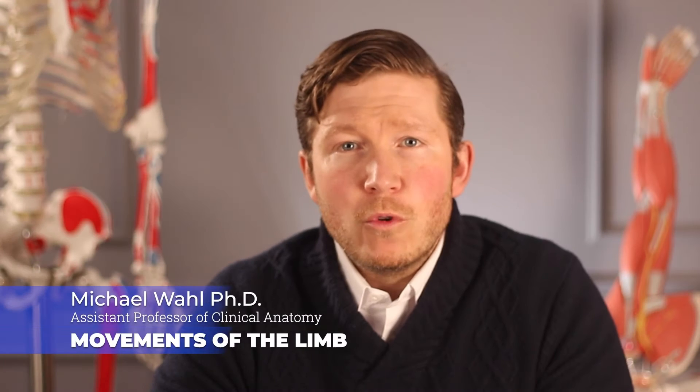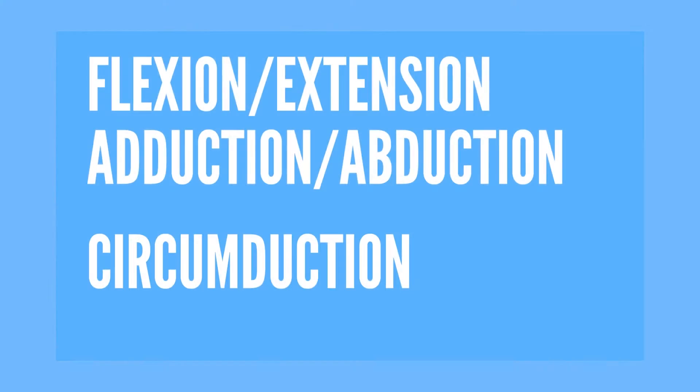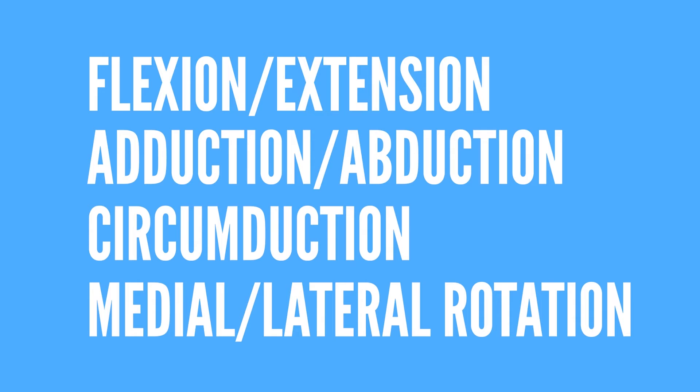Various terms describe movements of the limbs and other parts of the body. Most movements are defined in relation to the anatomical position and occur at joints where two or more bones articulate with one another. These include flexion, extension, adduction, abduction, circumduction, medial or internal rotation, and lateral or external rotation.